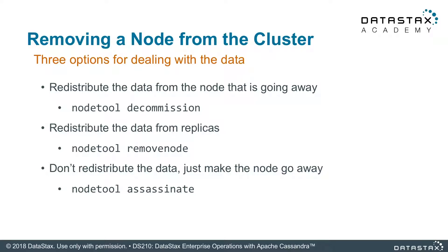These are very simple commands, but if you type them for the wrong reason you're going to be sorry — just know what they are. Node tool decommission sets up that activity where it actually starts streaming data away from the node, getting it ready to be removed. That data that's stored there needs to go out, consistency checked, and then it's ready to go offline.